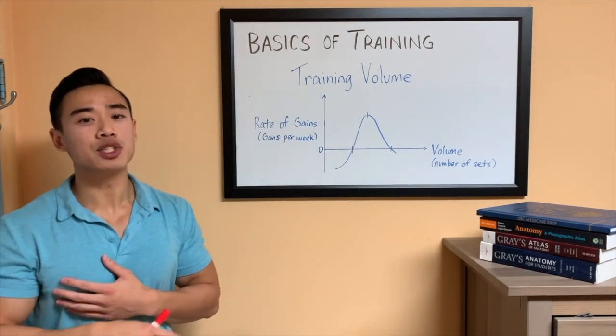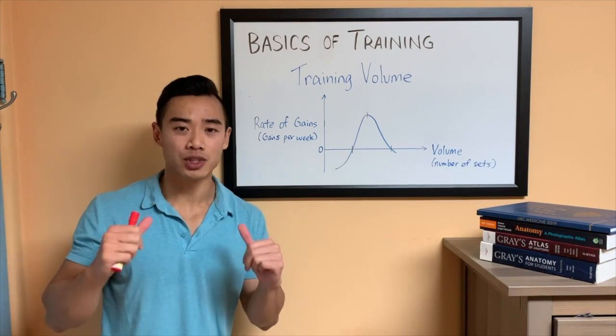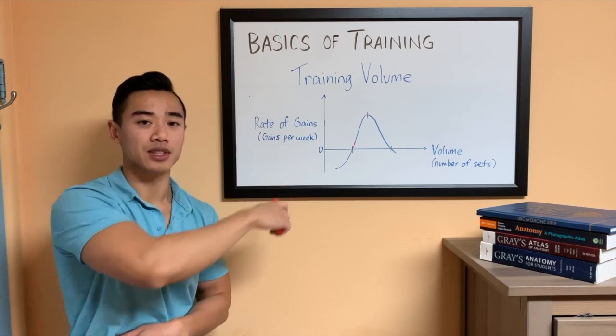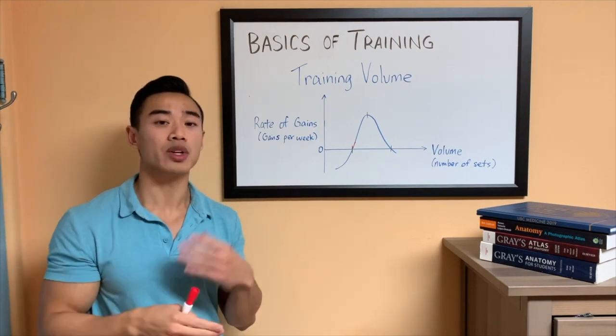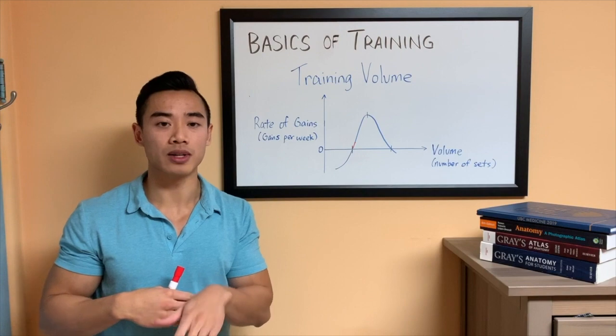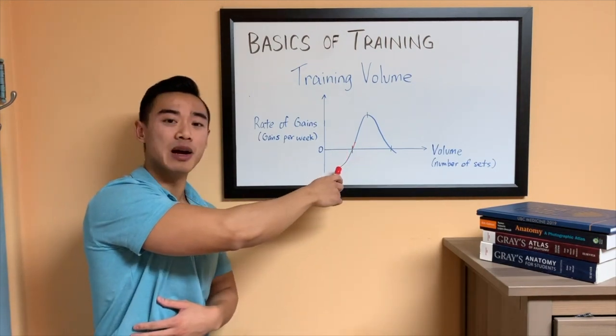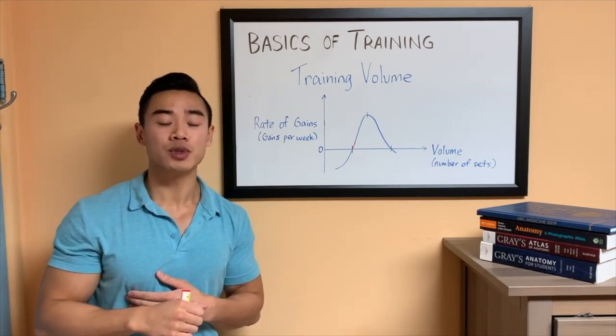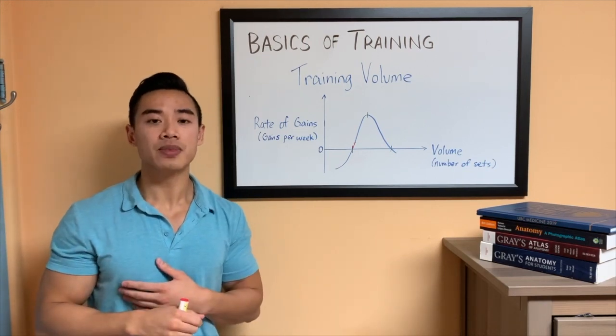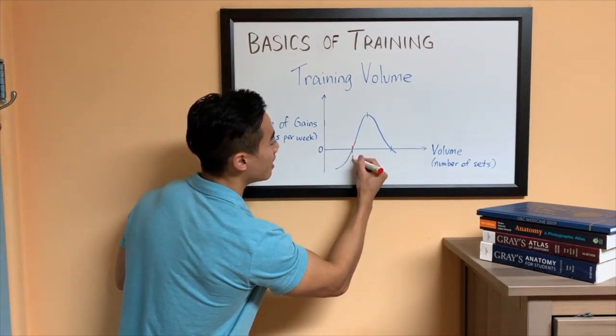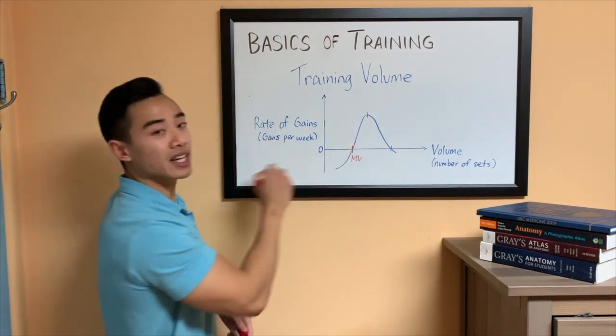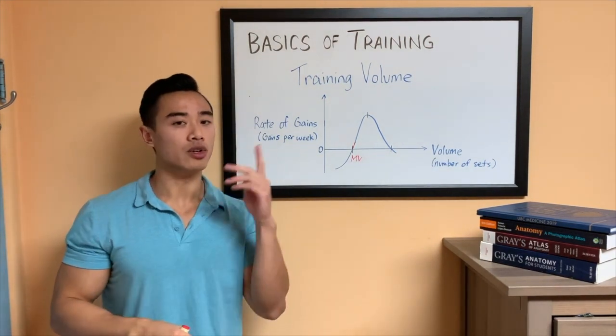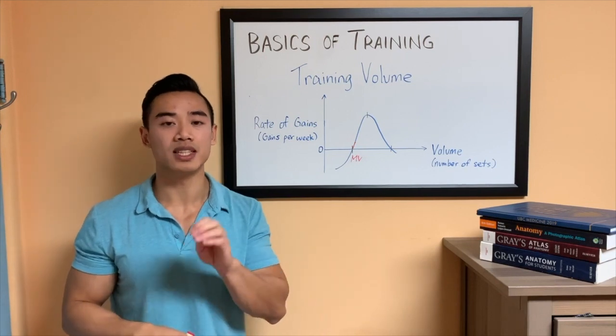Note that our rate of gains has a positive and a negative side on this graph, which means obviously you can be making progress, but you can also be losing progress. And it makes sense that if you do a small enough amount of volume, you're going to lose your muscle. Now, the first volume landmark that I'm going to introduce is called maintenance volume. And this we'll put on the graph as MV. And that is the point on the graph where you're doing enough volume to just maintain your muscle. You're not gaining, you're not losing. Your rate of progress is zero.